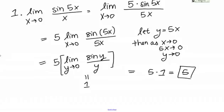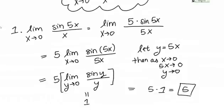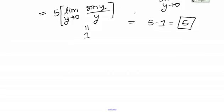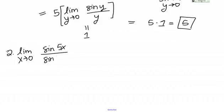You don't actually have to write out the substitution every time you do this kind of problem. I just did that to show you that if the argument of the sine and the denominator are the same, this will work out nicely. That was a pretty simple one. Let's do one that's a little more complicated: the limit as X goes to 0 of sine of 5X over sine of 7X.